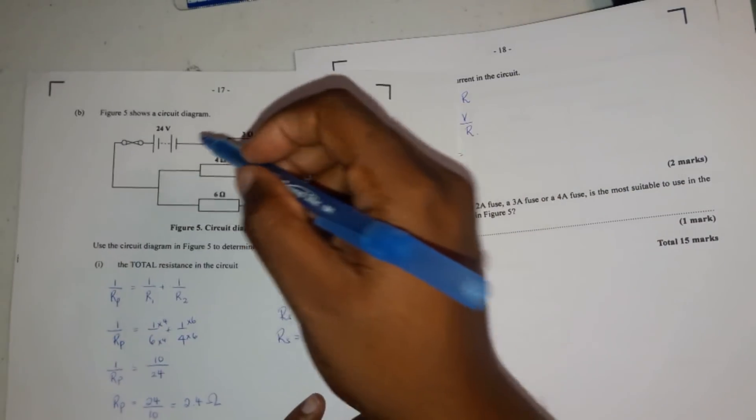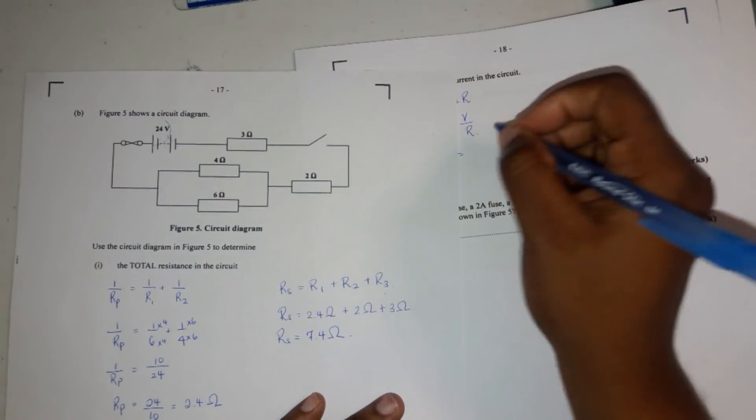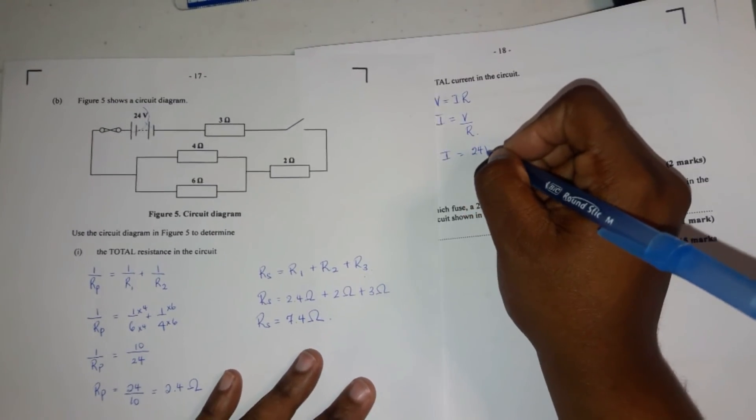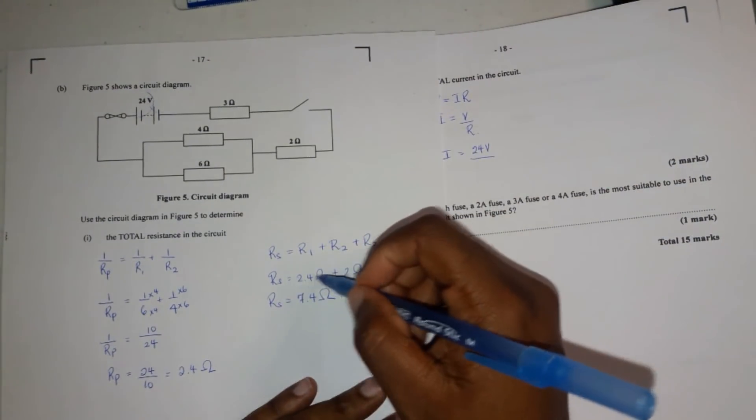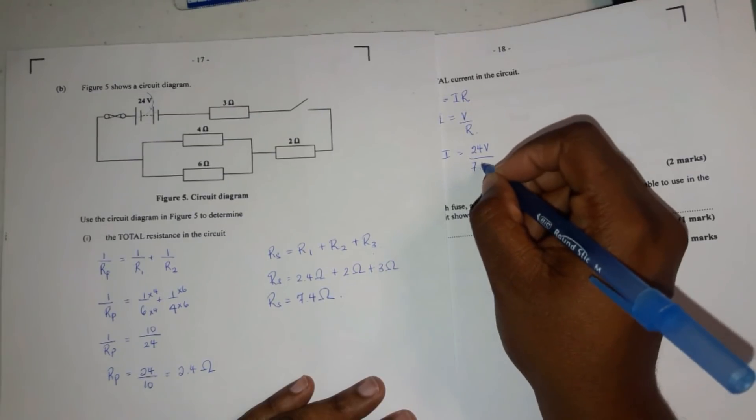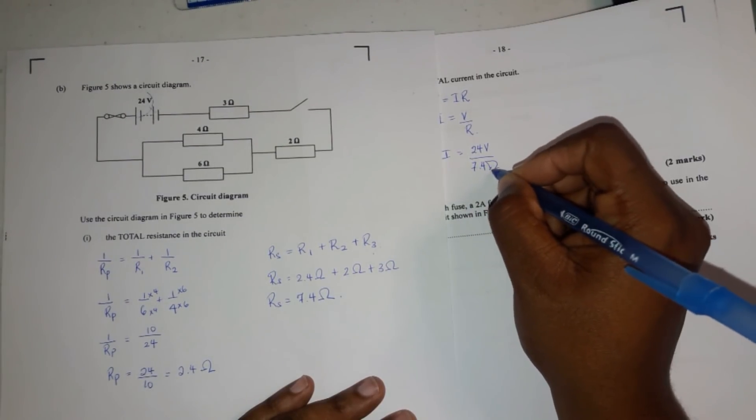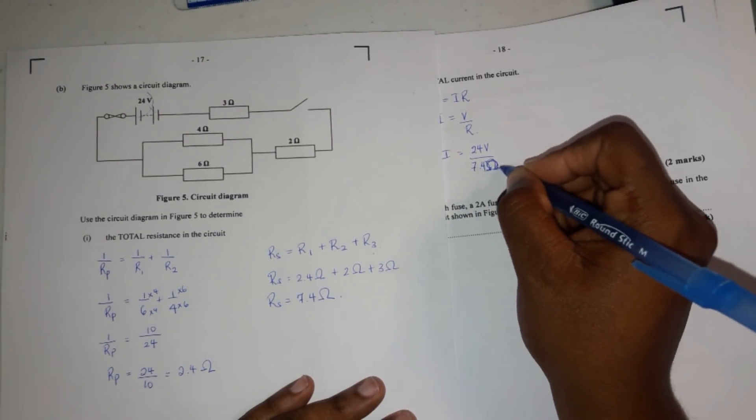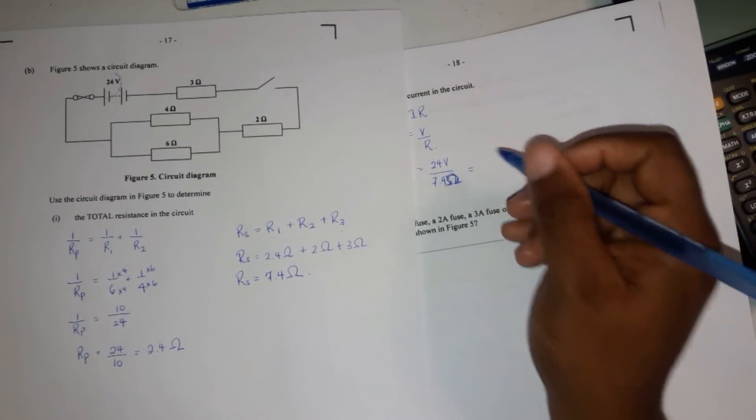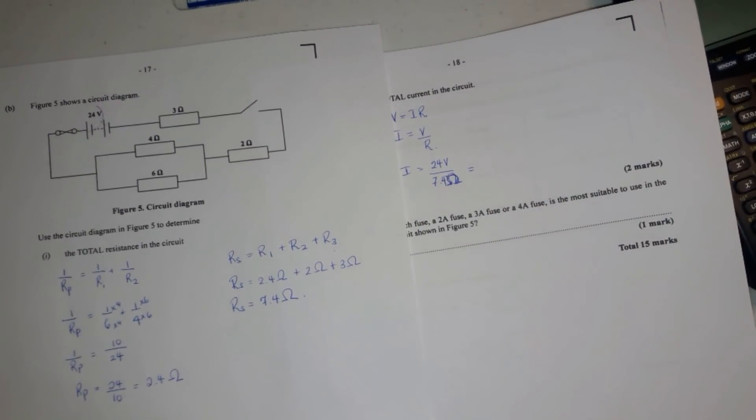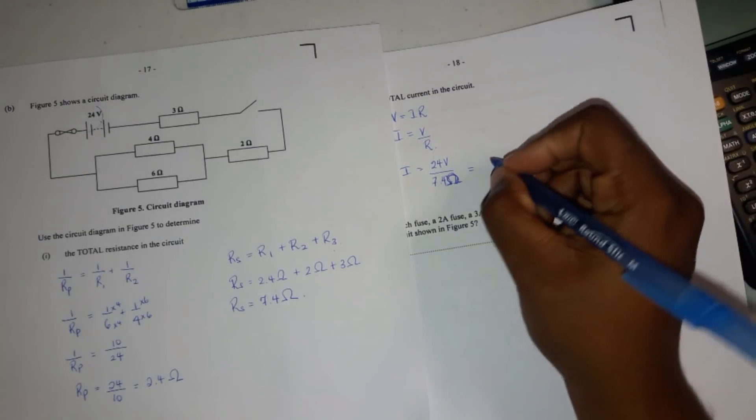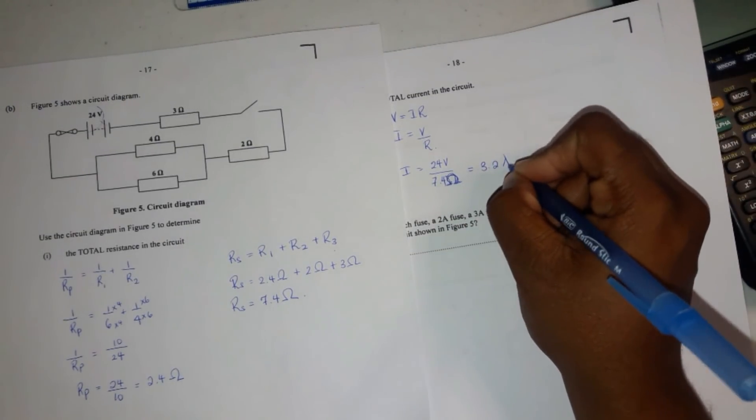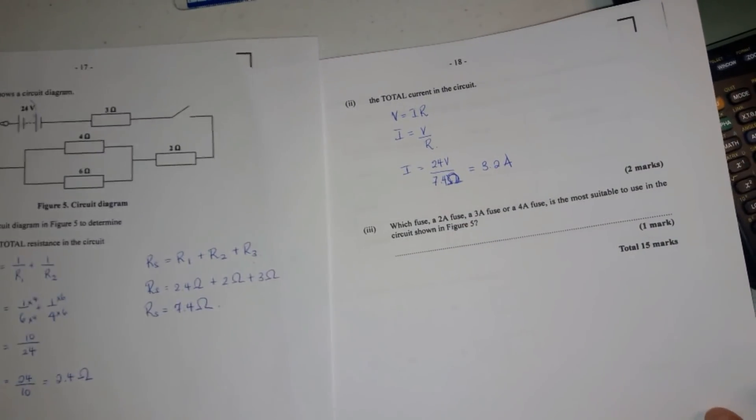I, what is the voltage? You get the voltage from up here. Say, put 24 volts over the total resistance, which is 7.4 ohms. And that will give us a beautiful number of, you guessed it, 3.2 amps. Okay?